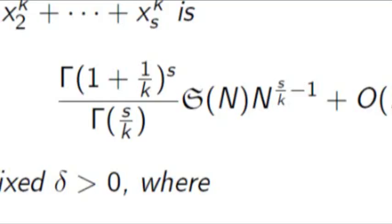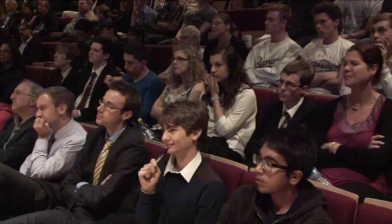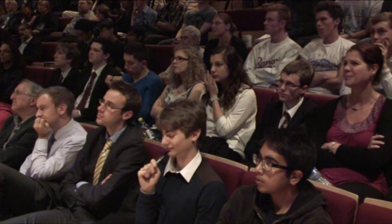How can you possibly get a formula like that to count the number of solutions to a perfectly friendly-looking equation? That would take several of the 12 lectures I gave in Cambridge to graduate students, but I'll just hint at it. We're trying to solve n = x₁^k + x₂^k + ⋯ + xₛ^k, and here's a way of writing the number of solutions as an integral involving e, π, i, and a squiggly long-s integral sign. The key fact is that the integral of e^(2πimθ) over θ from 0 to 1 equals 1 if m = 0 and 0 otherwise — a very complicated way of indicating whether or not m is zero.